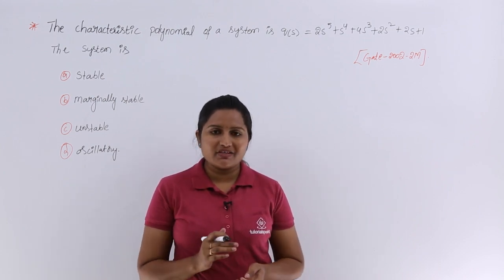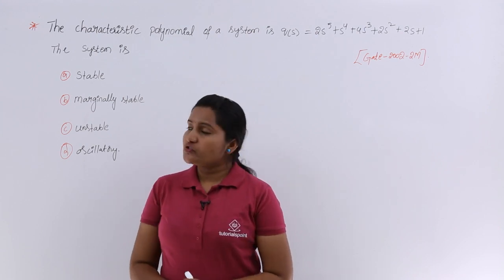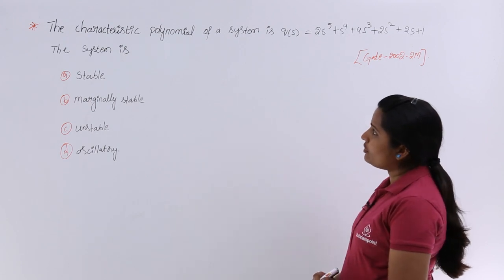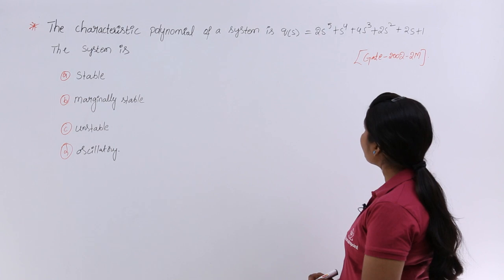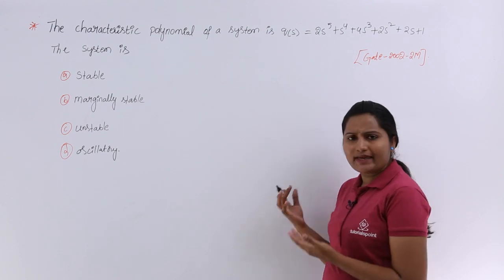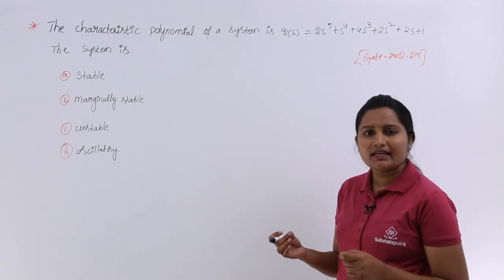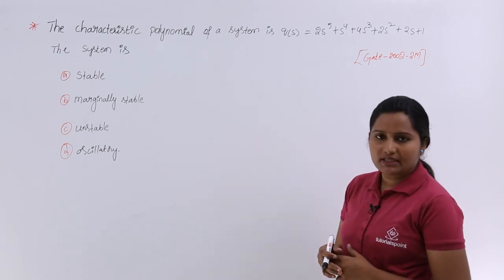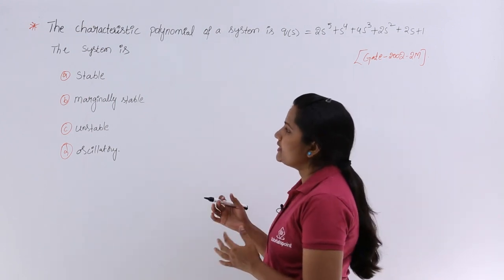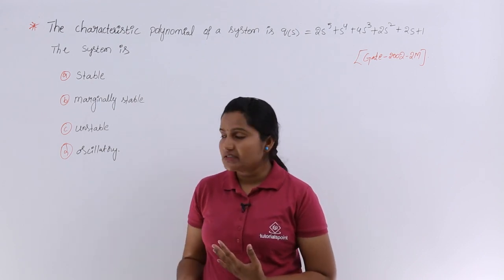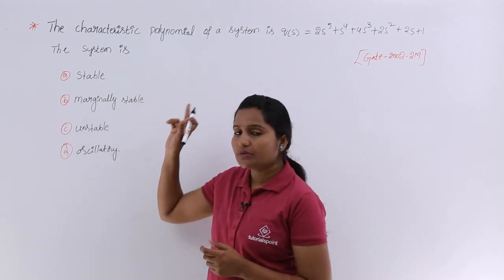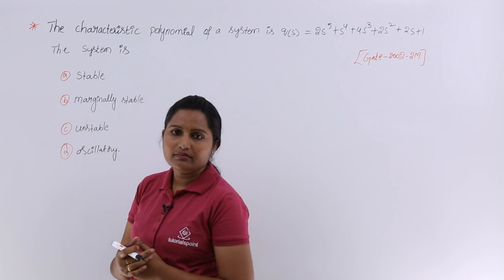In this video we are going to solve a previous GATE problem in stability analysis. This problem is from GATE 2002 for 2 marks. The characteristic polynomial of a system is Q(s) = 2s^5 + s^4 + 4s^3 + 2s^2 + 2s + 1. We need to determine whether the system is stable, marginally stable, unstable, or oscillatory.